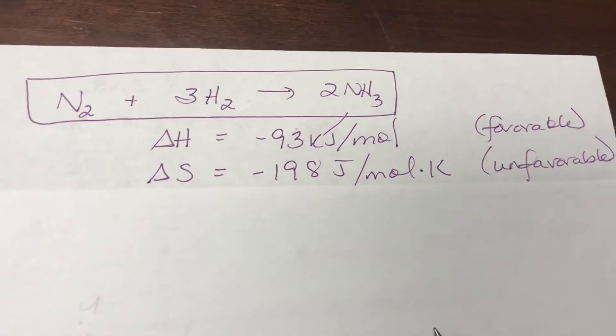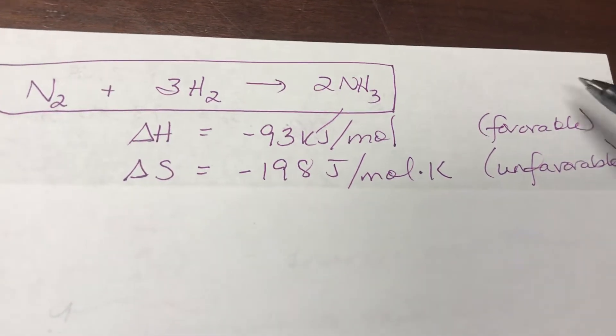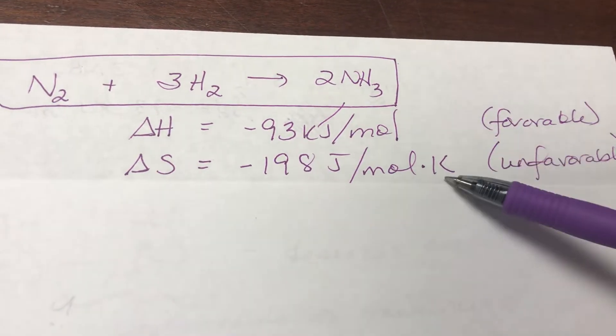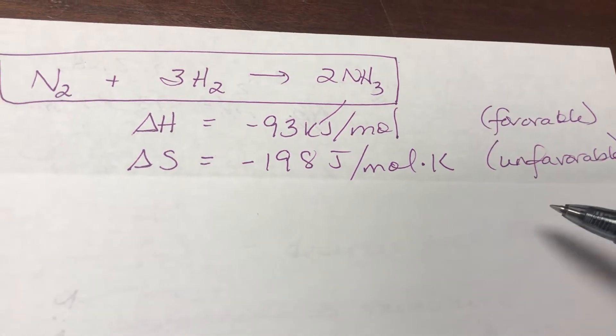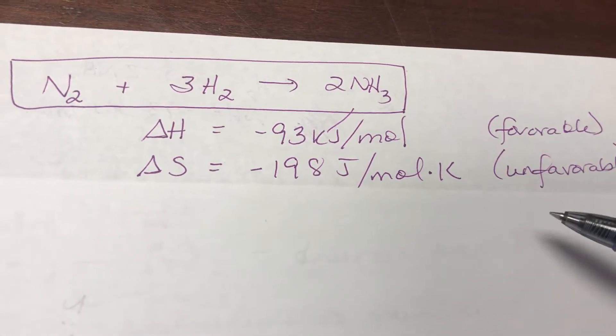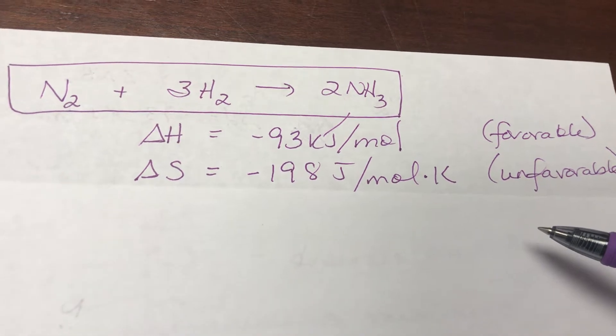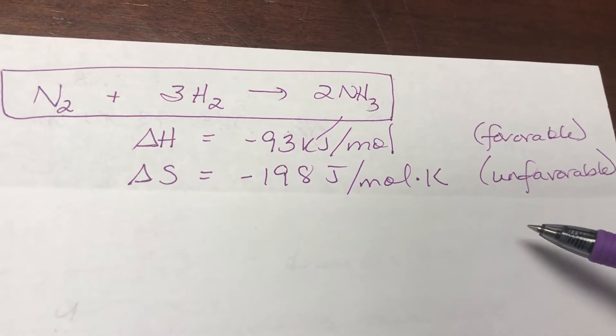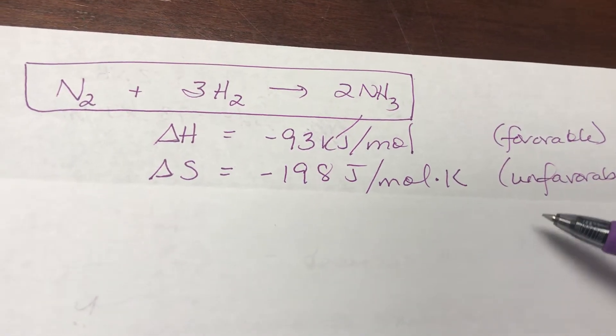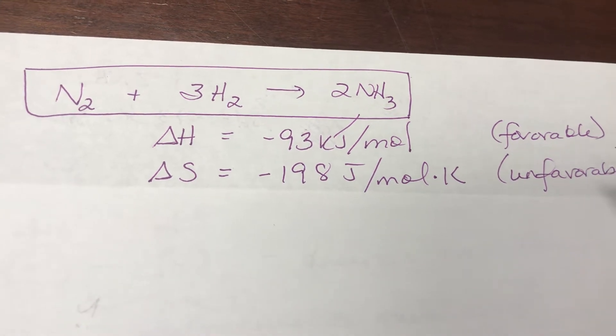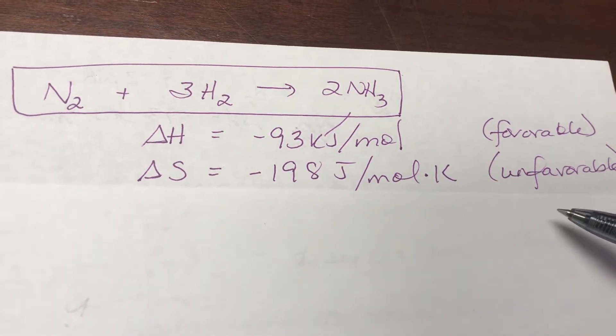But anyway, so this type of question comes up when enthalpy and entropy, when one's favorable and one's unfavorable. Of course at that point spontaneity depends on temperature and so there's always a temperature at which the reaction switches over from being spontaneous to non-spontaneous or vice versa.